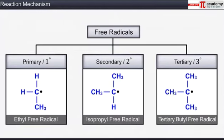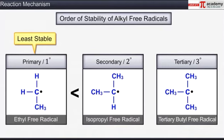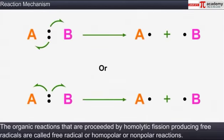Depending on the number of alkyl groups directly attached to the carbon free radical, alkyl free radicals are classified as primary, secondary, and tertiary. Greater the number of alkyl groups, greater is the stability. Hence primary alkyl radicals are the least stable while tertiary radicals are the most stable.